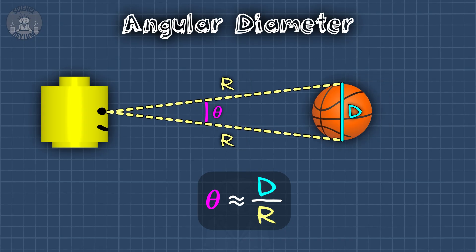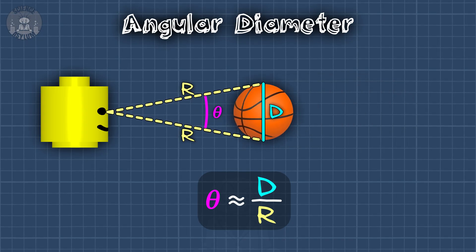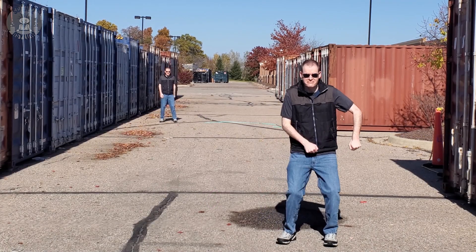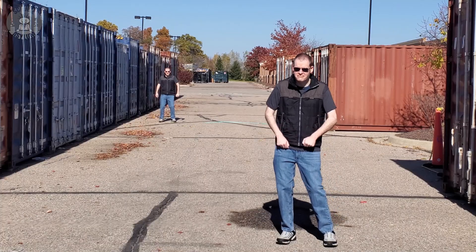If the ball is closer, the angle will be larger. If the ball is farther away, the angle will be smaller. That's why one of these clones looks farther away than the other. His angular diameter is smaller. Of course, our brains aren't precisely measuring these angles and doing calculations.